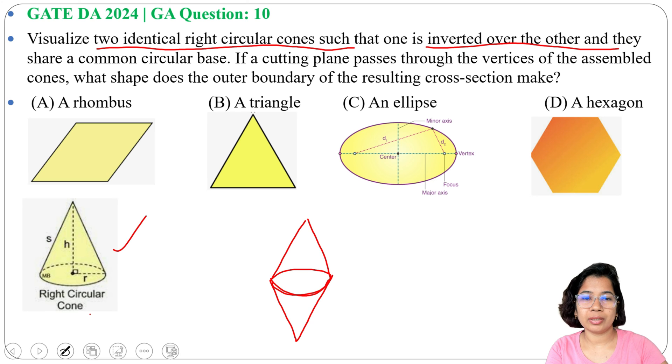A cutting plane passes through the vertices of the assembled cone, passing through like this. What shape does the outer boundary of the resulting cross-section make? It will look like a rhombus. So the answer will be option A, a rhombus.